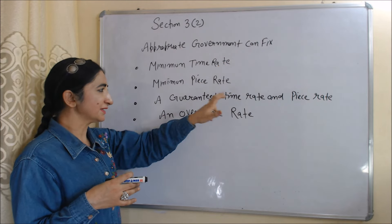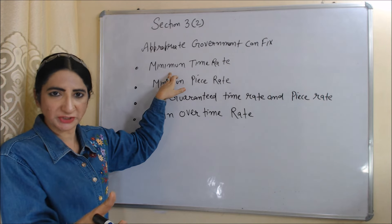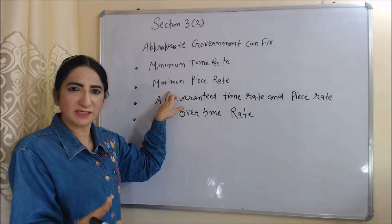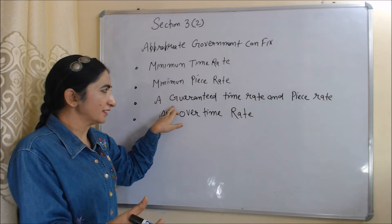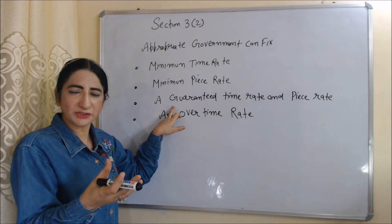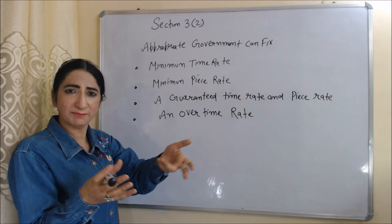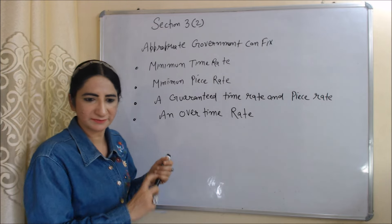In the minimum time rate, workers receive wages on the basis of the duration of work. In the minimum piece rate, workers receive wages on the basis of output. In the guaranteed time rate and piece rate, workers are assured to receive a specific amount combining both time rate and piece rate. Lastly, the government can also fix an overtime rate.